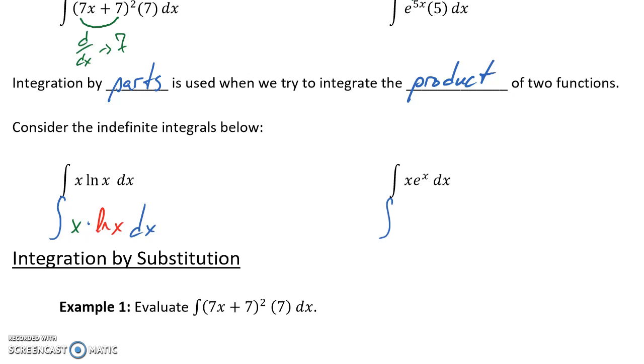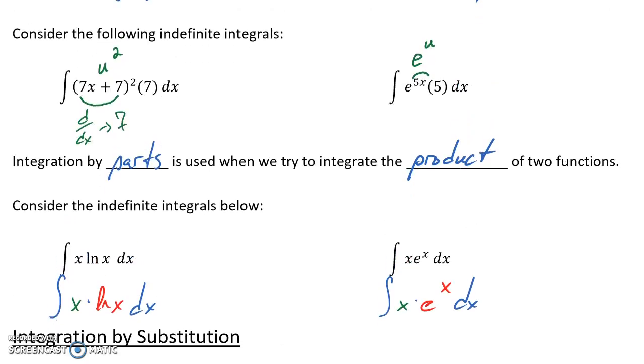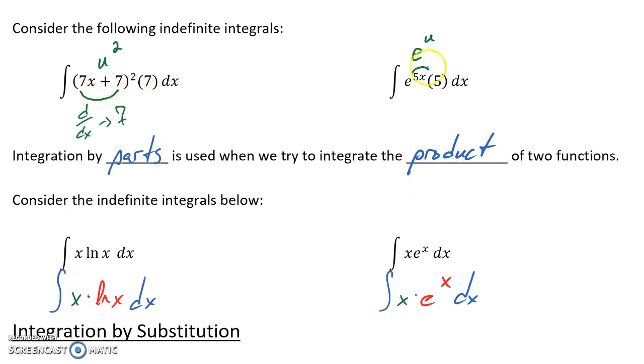And the second problem here, we have the integral of x times the second function e to the x. So again, any time we have the product of two functions we would want to think about using integration by parts. Whenever we have composite functions we'll want to think about using integration by substitution. So we'll take a look at integration by substitution with some more direct examples, a couple of trickier problems, and then tackle integration by parts.